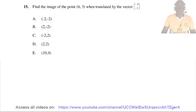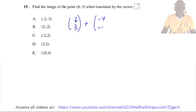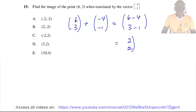Question 15: Find the image of the point with coordinates (6, 3) when translated by the vector (−4, −1). The image equals (6, 3) + (−4, −1) = (6 − 4, 3 − 1) = (2, 2). So the answer is D.